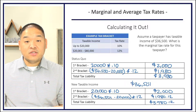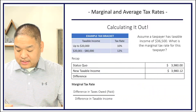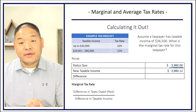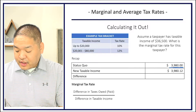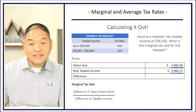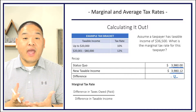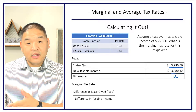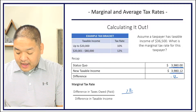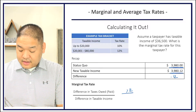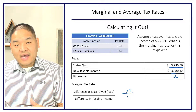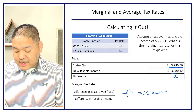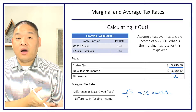To get the marginal tax rate using the formula, we take the difference in taxes owed — 12 cents — divided by the difference in taxable income — $1. That gives us 0.12, or 12%, which matches what we saw from looking at the tax bracket directly. So the marginal tax rate is confirmed at 12%.